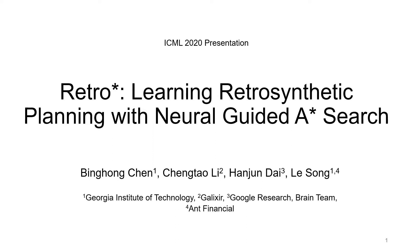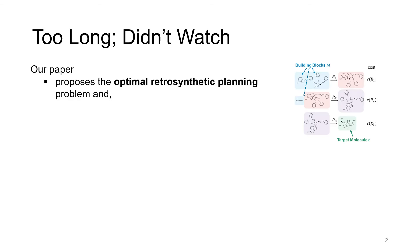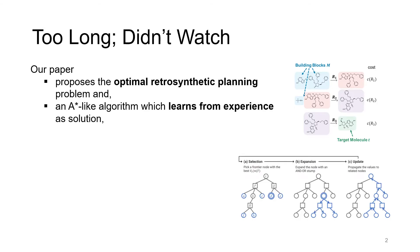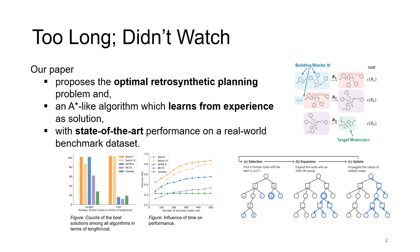This is joint work with Cheng Chao Li, Han Jun Dai, and Li Song. Before we start, I want to give you an overview of our paper and this talk. Our paper proposes the optimal retrosynthetic planning problem and an A-star-like algorithm which learns from planning experience as the solution, with state-of-the-art performance on a real-world benchmark dataset.